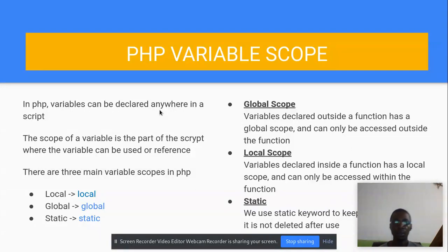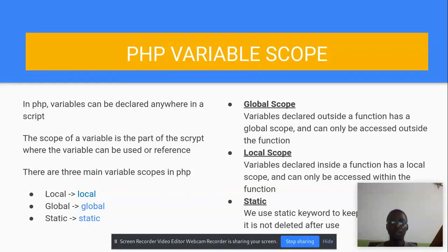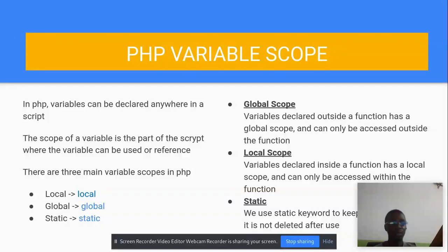The next thing we are going to talk about is variable scope. Every language has scopes where you can declare functions and variables and where you can use them. In PHP, variables can be declared anywhere in your script, but the scope of a variable is the part of the script where the variable can be used or referenced. You can declare a variable somewhere and try to use it somewhere else and it does not work. In PHP there are three main variable scopes: global scope, local scope, and static scope.